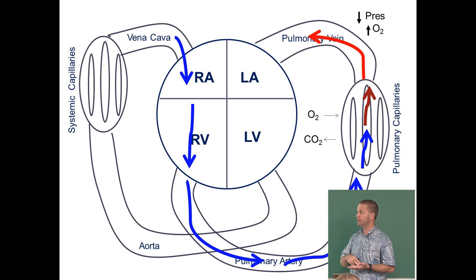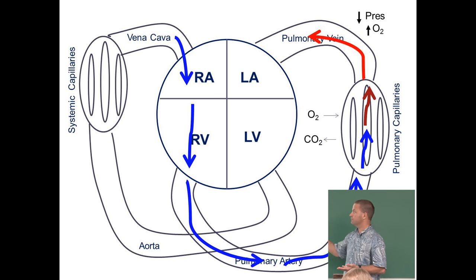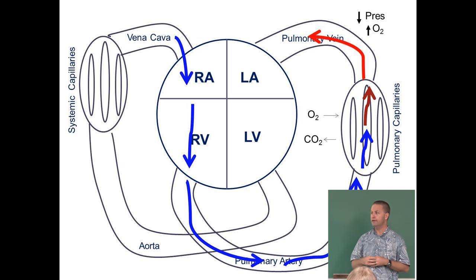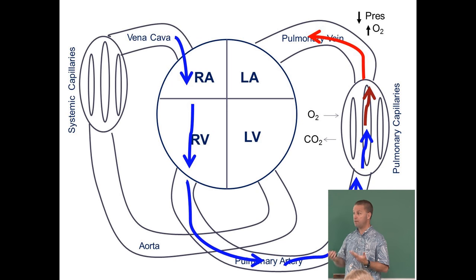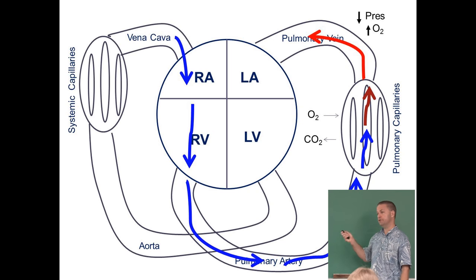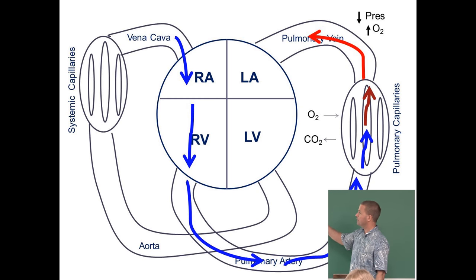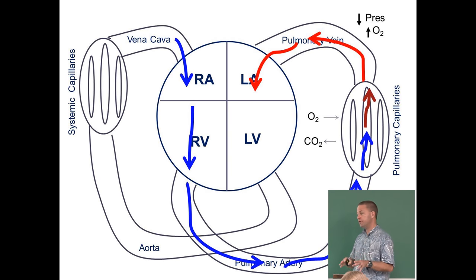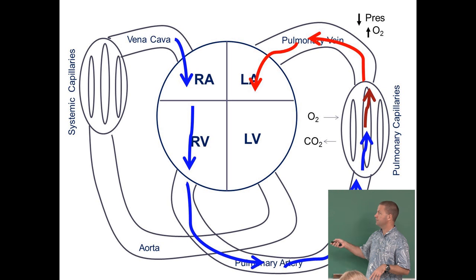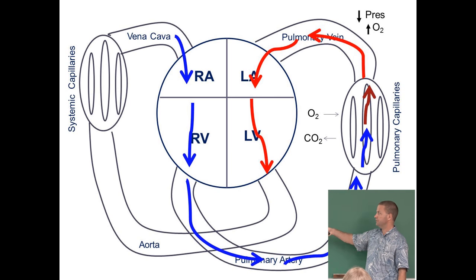The pulmonary vein carries oxygenated but low-pressure blood back to the heart. That's why blood must pass through the heart a second time — to be repressurized for the systemic circuit. This is why we have four chambers. Some vertebrates like fish have a two-chambered heart, but mammals with high metabolisms need an efficient four-chambered system to deliver oxygen and nutrients to tissues in a timely manner.